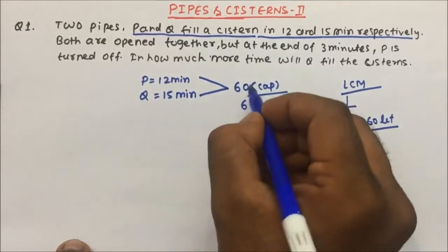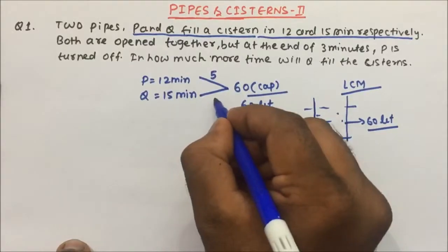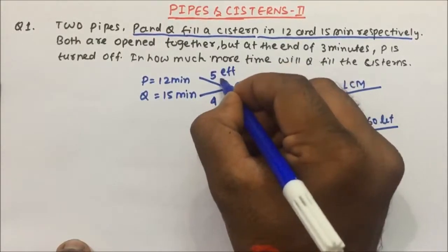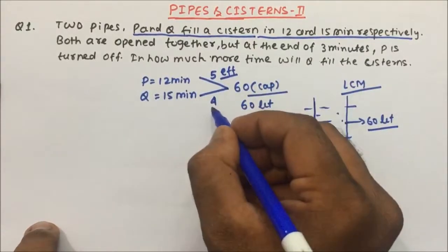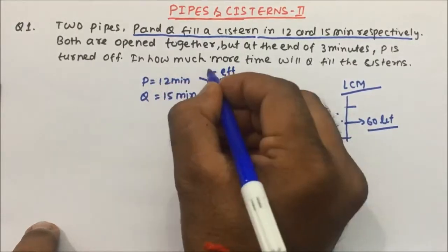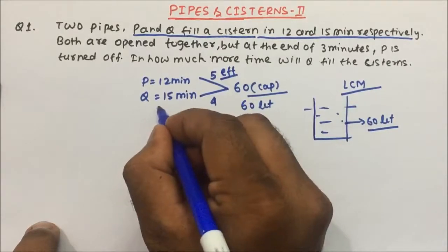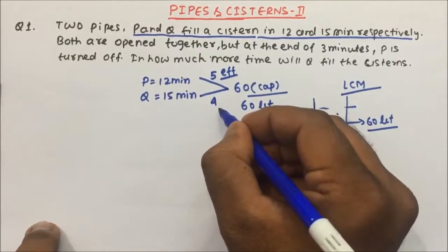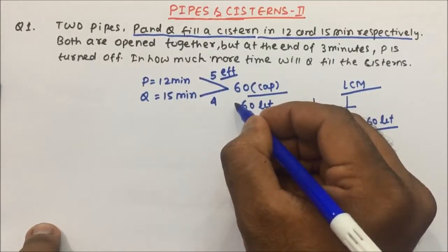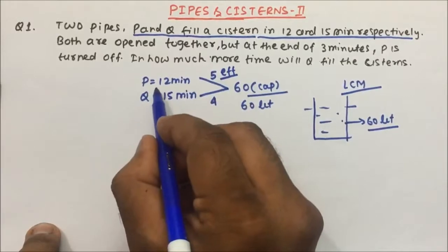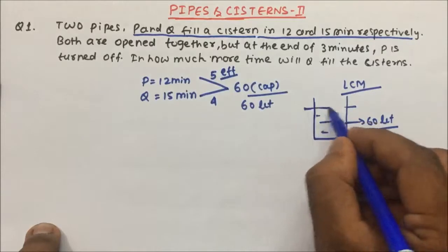Dividing 60 by 12 gives 5, and dividing 60 by 15 gives 4. These become the efficiencies: efficiency of pipe P is 5 and efficiency of pipe Q is 4. That means P can fill 5 liters in 1 minute and Q can fill 4 liters in 1 minute. Efficiency means the amount of work done in 1 day, 1 hour, or 1 minute.